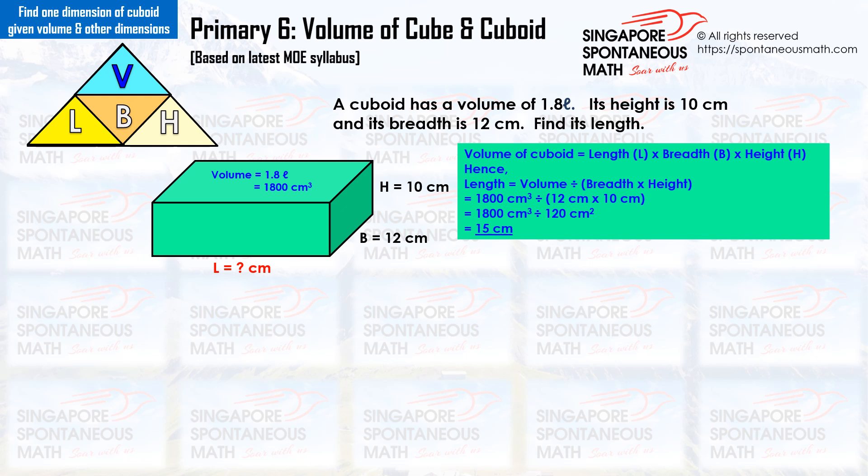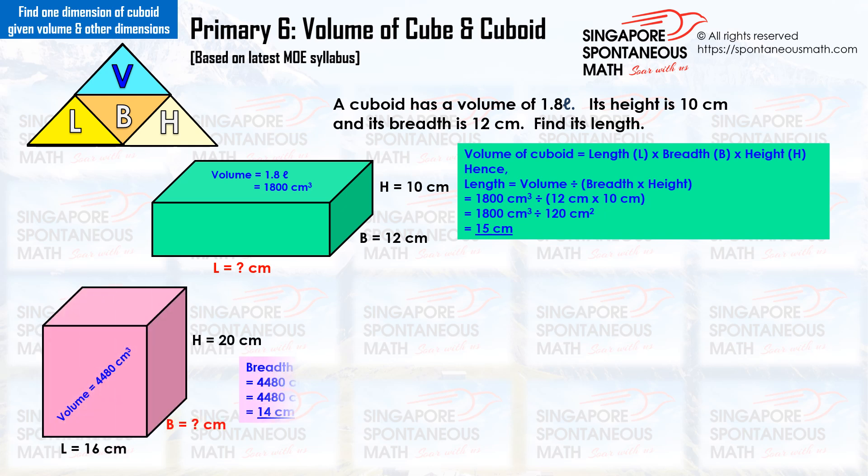We have the breadth and the height — multiply them: 12 cm times 10 cm equals 120 cm². To find the length, we take the volume divided by the figure for breadth times height: 1,800 divided by 120 equals 15. The length of the cuboid is 15 cm.